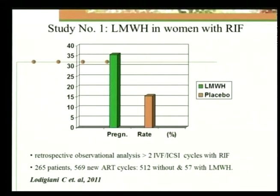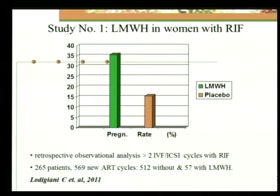The first study was conducted by Lodigiani et al. — a retrospective observational analysis of women who had undergone more than two IVF-ICSI cycles with recurrent implantation failure. They compared 265 patients with 569 new ART cycles; 512 women were given placebo and 57 were treated with low molecular weight heparin. Women given LMWH showed pregnancy rates of 36% compared to 16% in women given placebo. Although this looks very impressive, these results were not found to be statistically significant.